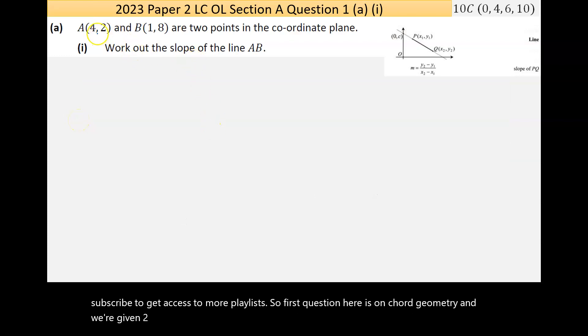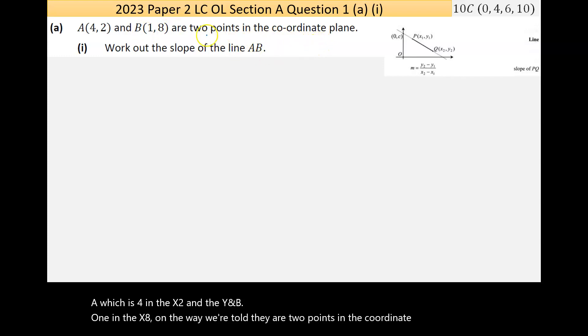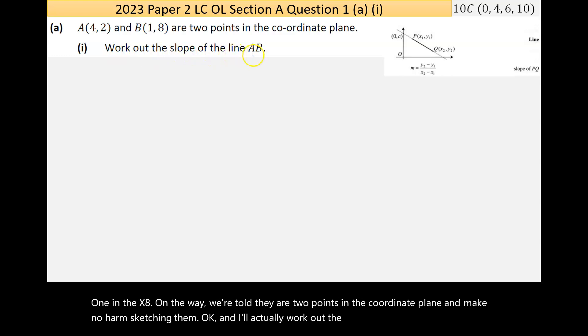The first question here is on coordinate geometry and we're given two points: A which is 4 on the x, 2 on the y, and B, 1 on the x, 8 on the y. We're told they are two points in the coordinate plane. I'll actually work out the slope of the line AB.